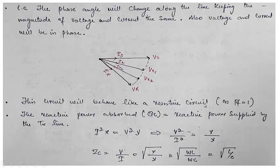This circuit behaves like a resistor circuit because the power factor is unity at all points — current and voltage are in phase. The reactive power absorbed by the inductance QL equals the reactive power supplied by the line capacitance QC. There is reactive power exchange between the series inductance and the shunt capacitance of the transmission line, but since they balance, I²·X equals V²·Y. So V²/I² equals X/Y, meaning V/I equals the characteristic impedance Z_rc, which equals X/Y equals omega·L over omega·C equals L/C — this is the characteristic impedance or surge impedance of the transmission line since there is no R.